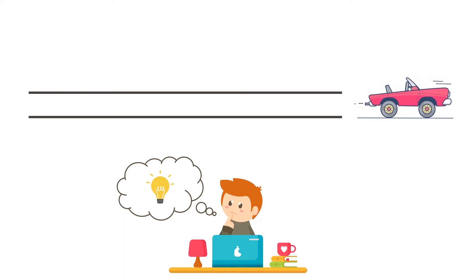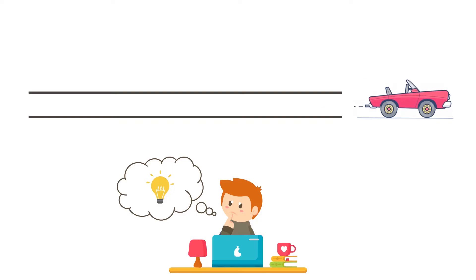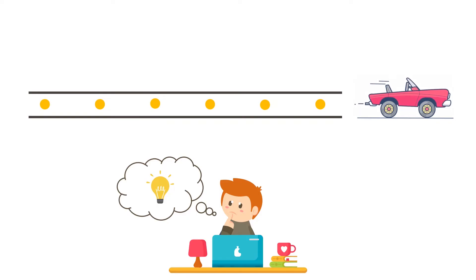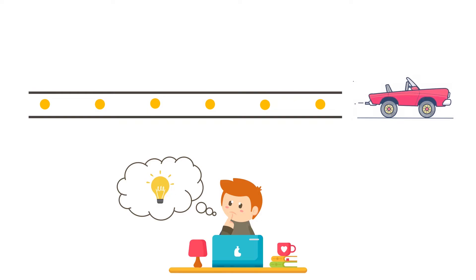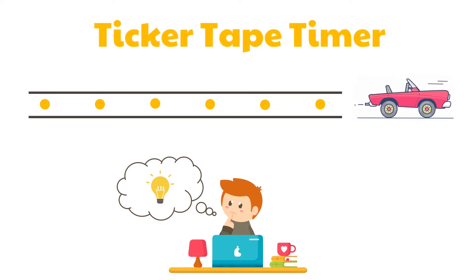Perhaps such a device could track the location of an object moving in one dimension by placing a dot on a strip of paper. The trail of dots would represent the motion of the object as it changes its position over the course of time. Believe it or not, there is such a device — it's called a ticker tape timer.